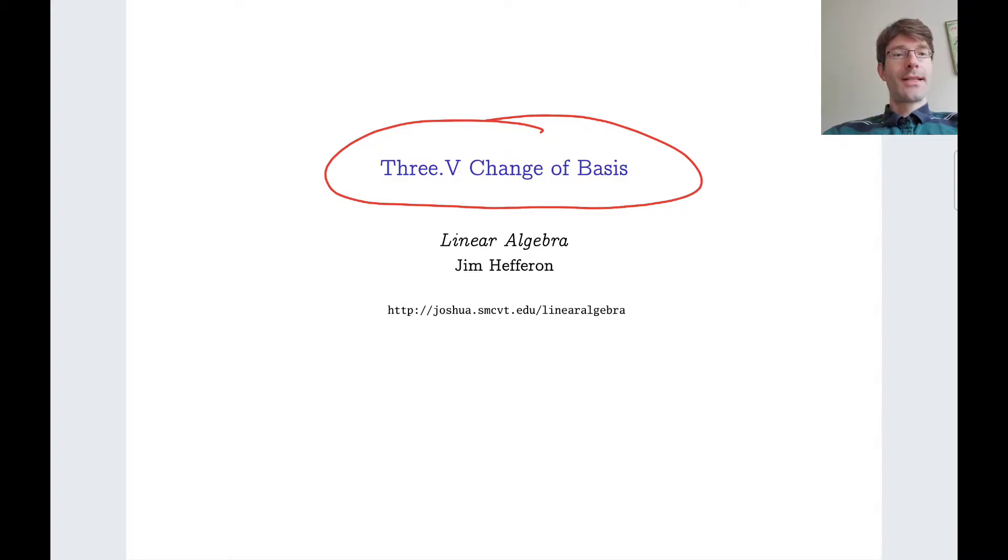Let me remind you of the main message of this chapter, which has been if you have a linear map from V to W, you can represent this linear map as a matrix. It means that there is a matrix for the map H such that if you multiply this matrix with a representation of the vector V, of a vector V from the domain, then you obtain H of V or rather a representation of H of V.